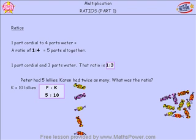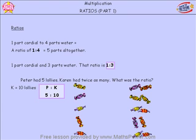Now if Peter divided his five lollies up into five groups, five separate groups, he would have one in each group. And if Karen did the same and divided her lollies up into five groups, she would have two in each group. So for every one of Peter's lollies, there would be two of Karen's lollies.